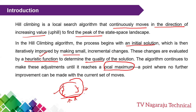This process continues until we reach a local maximum — that means we keep increasing until we reach a point where no further improvement is possible. From that point, a downfall occurs. This maximum point is called the local maximum. This is the concept: we are climbing the hill step by step until we reach the local maximum.